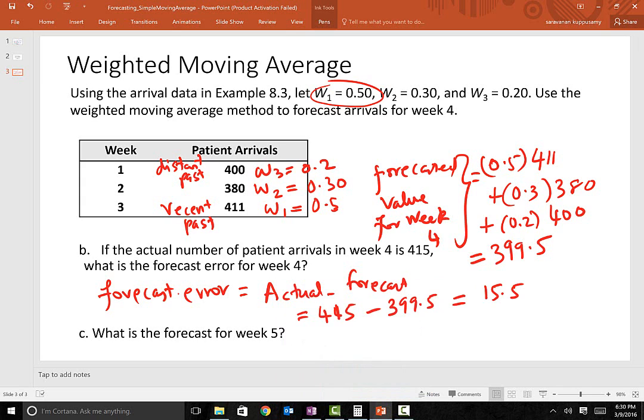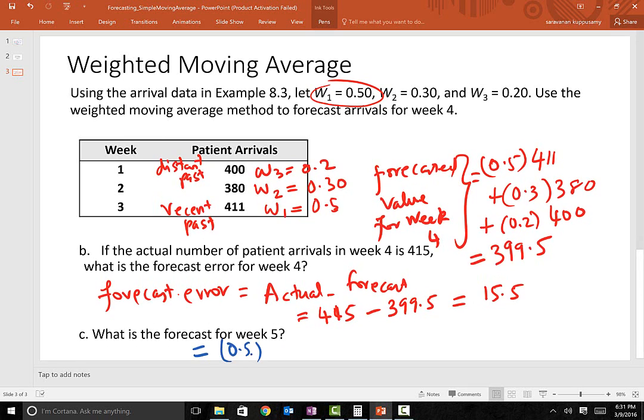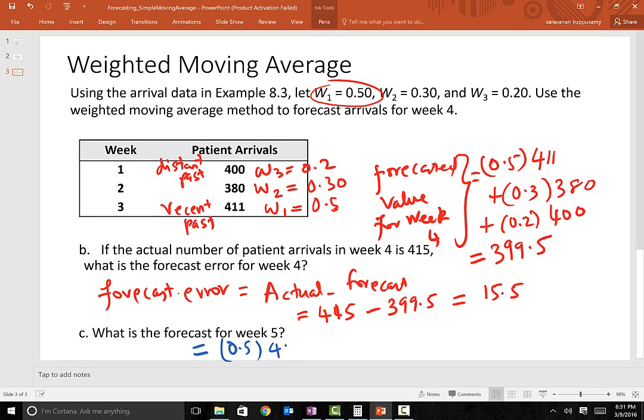How are we going to forecast for week 5? Week 5's forecasted value is 50% of week 4's actual value plus 30% of week 3's actual value plus 20% of week 2's actual value. This amounts to 406.8.